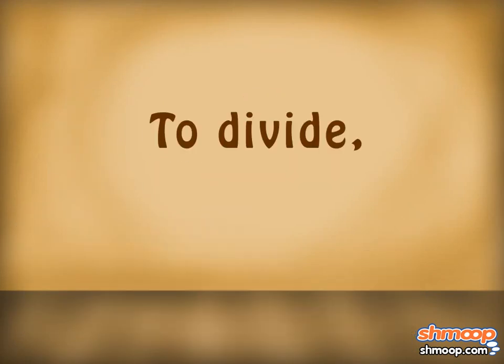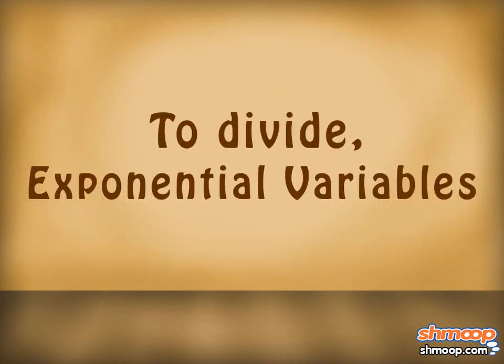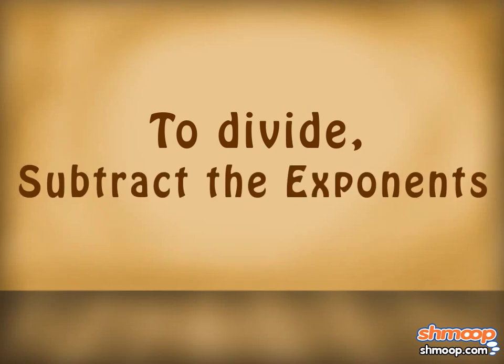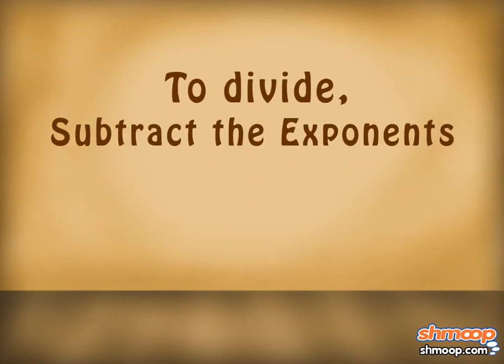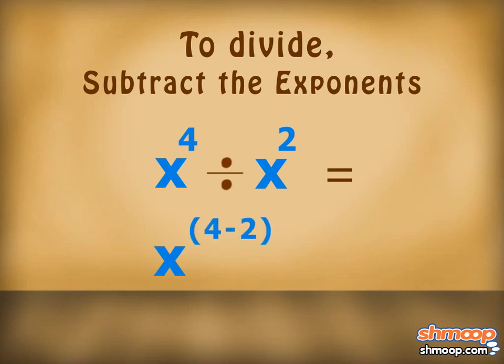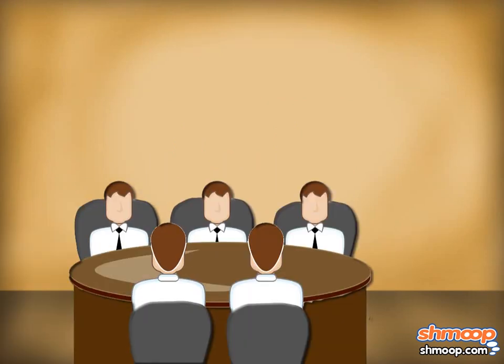Until he remembers that to divide exponential variables, you simply need to subtract the exponents. So, x to the fourth divided by x squared equals x to the power of 4 minus 2, equals x squared. Piece of cake.